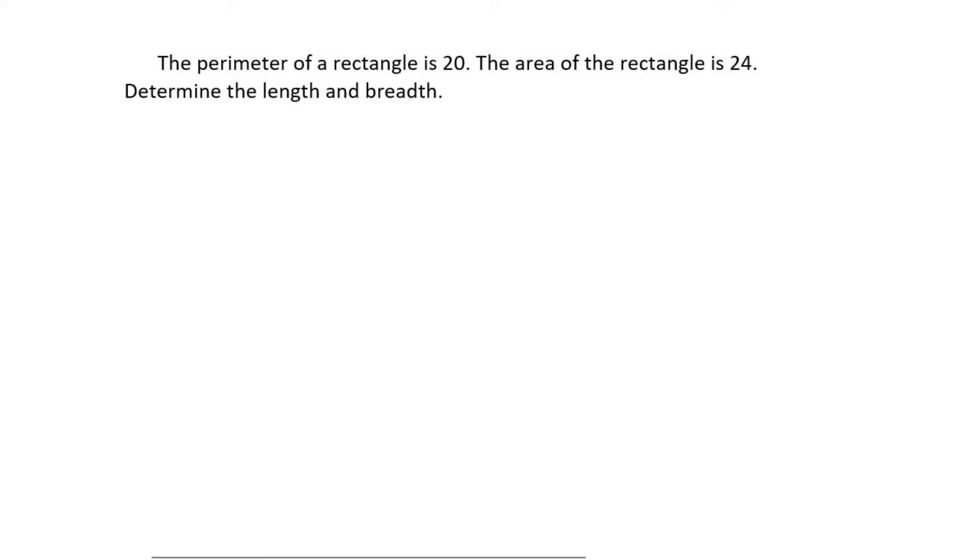We are told that we have a rectangle with a perimeter of 20. So what we could do is make a perimeter. Well, there's a rectangle, and the perimeter is the distance around, and that should be 20.